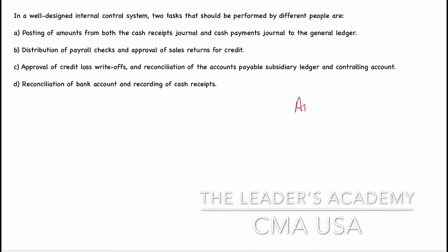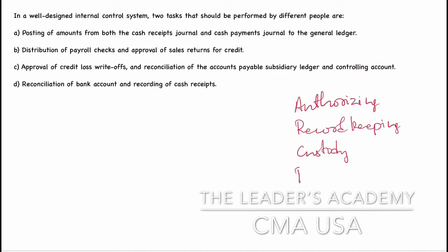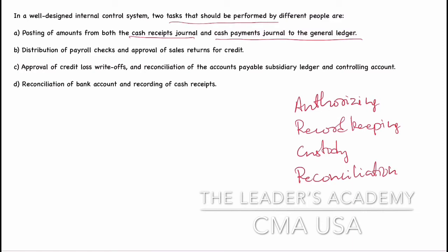Again, remember the four things: authorizing, record keeping, custody, and reconciliation. For Option A, posting from cash receipts and payments journals to the general ledger is just record keeping — no authorization, no custody, no reconciliation involved. So this person is only doing one type of duty; this is not the answer. For Option B, distribution of payroll checks falls under custody, and approval of sales returns is authorizing, but these are two different departments. So the same person can do these.